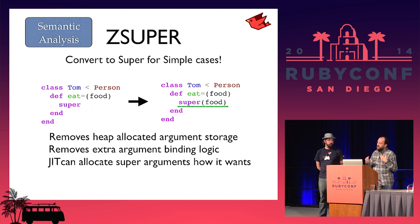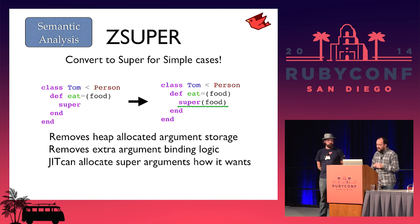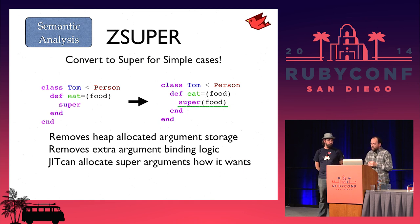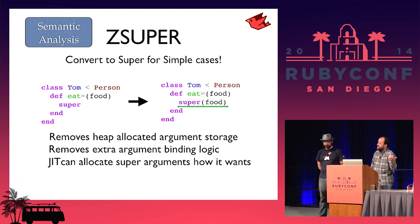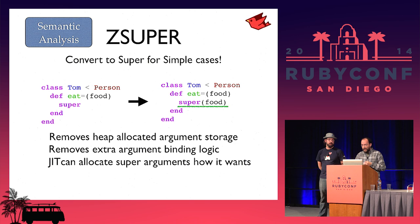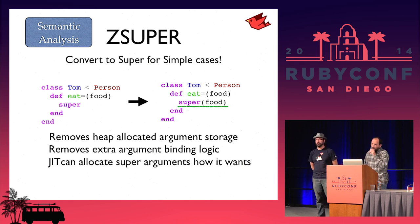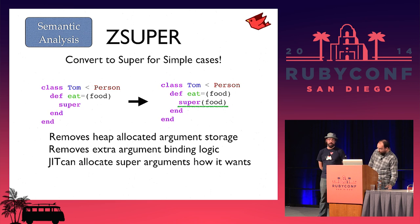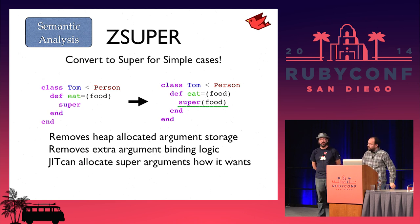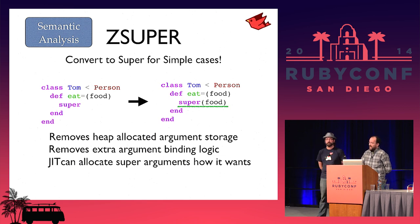During semantic analysis we fix up things that caused a lot of complexity with the AST — for instance, the dreaded zsuper. We just propagate the method's arguments down to the super call site so it's no longer a zsuper, just a regular super. We get rid of a lot of logic and the JIT can allocate much more efficiently. This form of zsuper is surprisingly complicated to implement in any Ruby implementation. With this analysis, we've boiled it down to a very small portion of cases that actually need all that complexity — most are now plain supers.